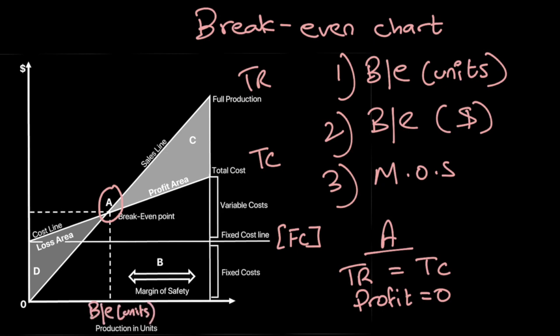This becomes the breakeven point in units terms on the x-axis, because the x-axis represents your output, and this becomes the breakeven in dollar terms on the y-axis. Point A and these dotted lines can show breakeven in units and breakeven in dollar terms. We can also locate the margin of safety — in this graph the firm is actually producing this output, and region B shows your margin of safety.